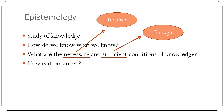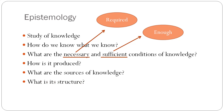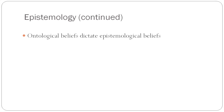So we're asking: how is knowledge produced? What are the sources of knowledge? What is the structure of knowledge? What are its limits? This leads to the main point: a person's ontological beliefs dictate their epistemological beliefs, and then how they're going to go about gathering knowledge.